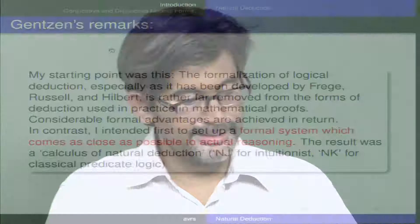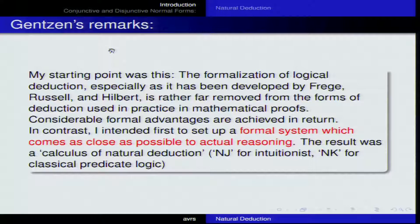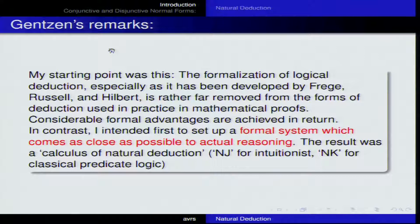Gentzen was of the view that mathematicians, when they prove certain theorems, may not be following the method adopted by Russell and Hilbert. He said: 'Considerable formal advantages are achieved. In contrast, I intended first to set up a formal system which comes as close as possible to actual reasoning.' The result was what he called a calculus of natural deduction — called NJ for intuitionists, or NK for classical predicate logic. It does not matter much which name you use.